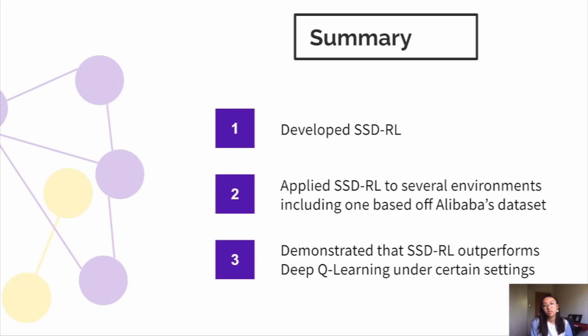In summary, we have developed SSDRL, a new deep reinforcement learning method which utilizes state space decomposition to accelerate and distribute training. We applied our method to several environments, including one based on a real-life dataset. And in our evaluation against deep Q-learning, we found that SSDRL converged to the optimal solution much faster. This was a brief overview of our method, but further evaluation of our performance can be found in our report. Thank you so much for listening.